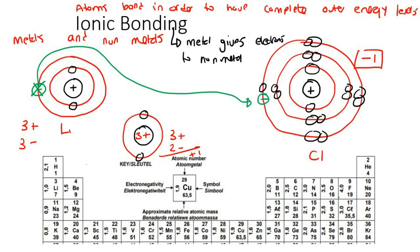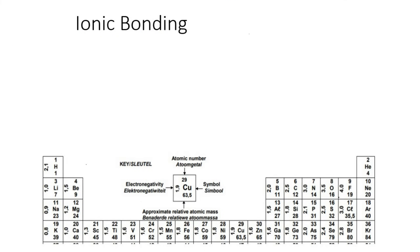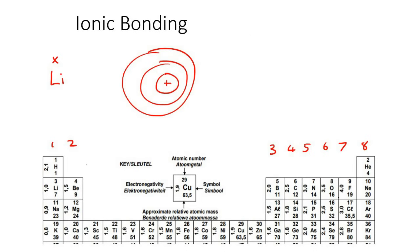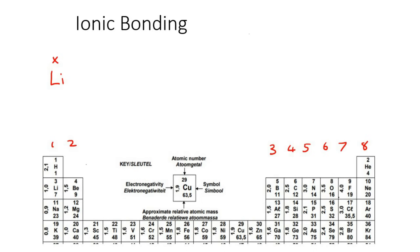From now on we're going to show ionic bonding using Lewis diagrams. With Lewis diagrams, you only need to know the group number — you only show the valence electrons on the outside, not all the electrons. We know there are electrons on the inside, but we only show the valence ones.